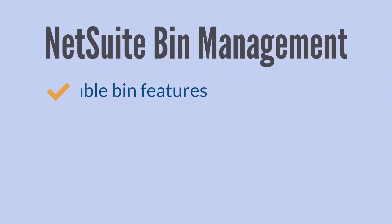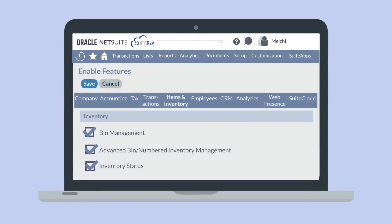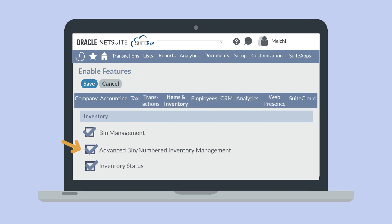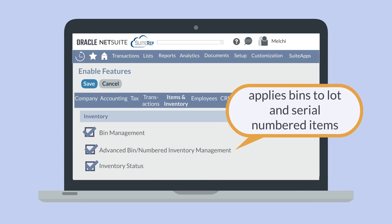First, you need to ensure that the features you need are turned on in your NetSuite account. There are two features connected with Bin Management, and both can be enabled under the Inventory section of the Items and Inventory tab in Enable Features. Bin Management is the most basic of the two features. With it, you will be able to associate item records with bins and track item locations based on the bins they are connected to. Advanced Bin/Numbered Inventory Management allows you to apply bin management to lot and serial numbered items. With this feature, you can associate bins on transactions without needing to connect bins to the individual item records first.